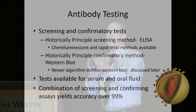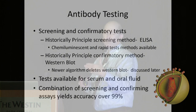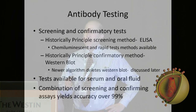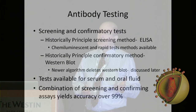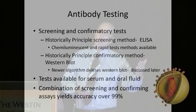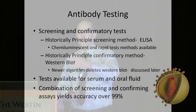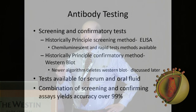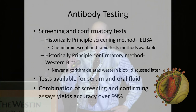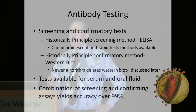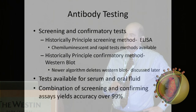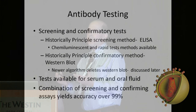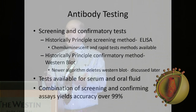For antibody testing, there is a two-test algorithm with screening and confirmatory testing. Historically, the principal screening method has been an ELISA test, with more automated chemiluminescent tests becoming available more recently. The traditional confirming method has been the Western blot: screen with ELISA, retest positives in duplicate, then confirm with Western blot. In the newer fourth-generation algorithm, the Western blot is no longer used. Tests are available for serum and oral fluid. The combination of screening and confirming assays gives accuracy over 99%, which is absolutely wonderful from a lab test standpoint.